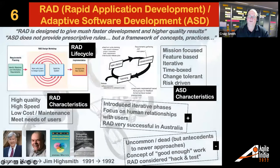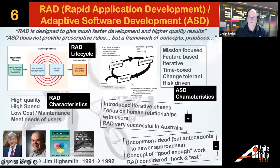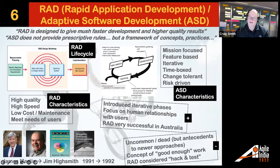RAD — Rapid Application Development — and Adaptive Software Development also go back to the early 1990s. James Martin was looking for things at high quality, high speed, and low cost, but meeting the needs of users, which was radical at the time. Jim Highsmith picked this up in his work on Adaptive Software Development, with the idea of cycles: speculation, collaboration, and learning — some kind of discovery then delivery loop. In the 1990s it was considered 'hack and test,' but a lot of our methods are built on the shoulders of these giants.